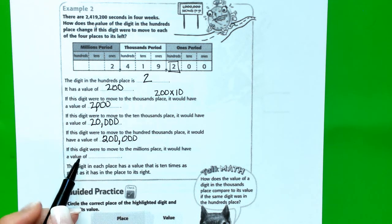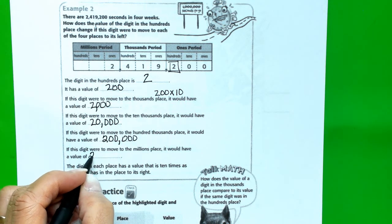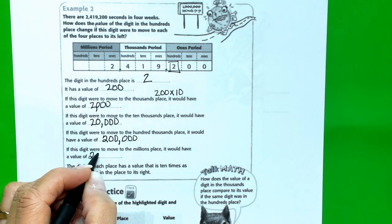And if this digit were to move to the millions place, it would have a value of 2,000,000.